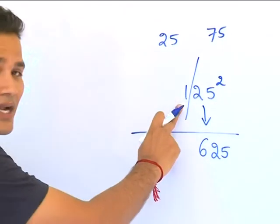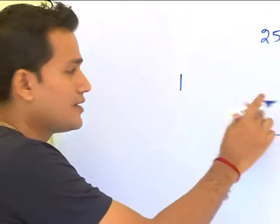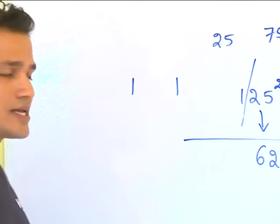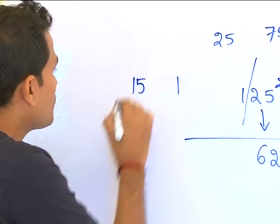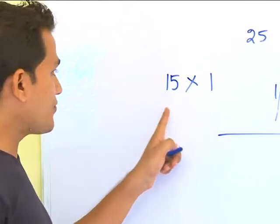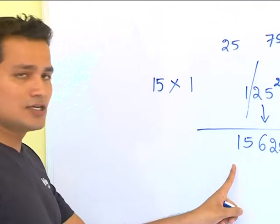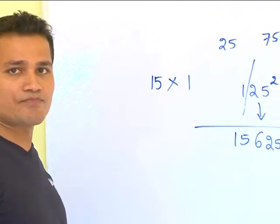This forms the right-hand part of the answer. Now you have 1 left. So what you do? You have 1 left. Write 1 twice and follow it up with 5. So you have 50 and 1. You multiply these two numbers. 50 into 1 would be 50. So 125 square is 15625. Easy.